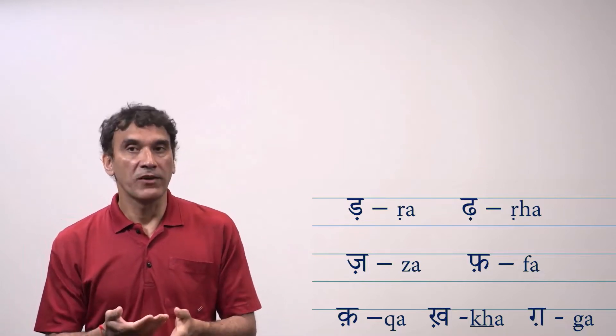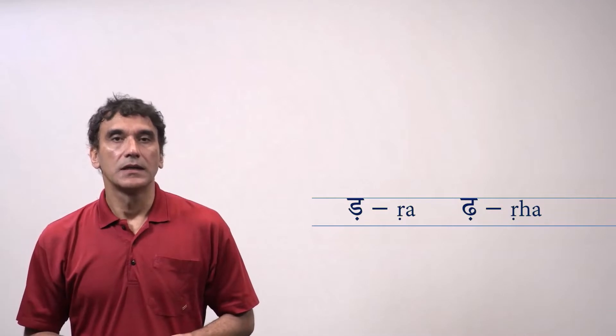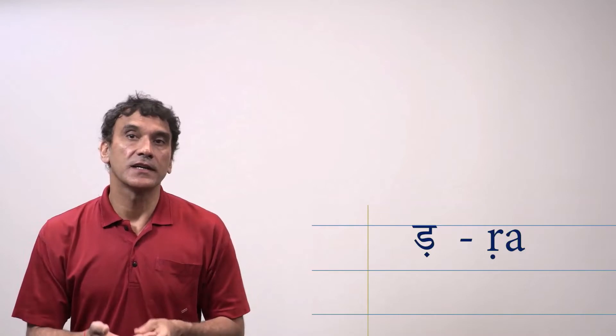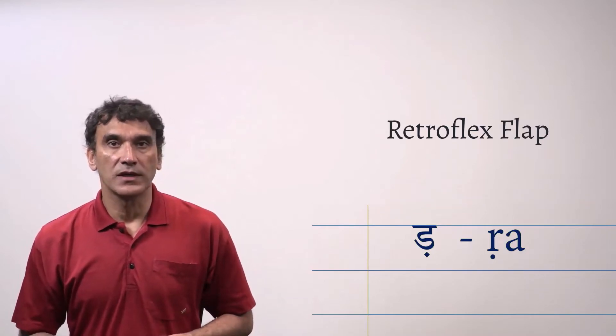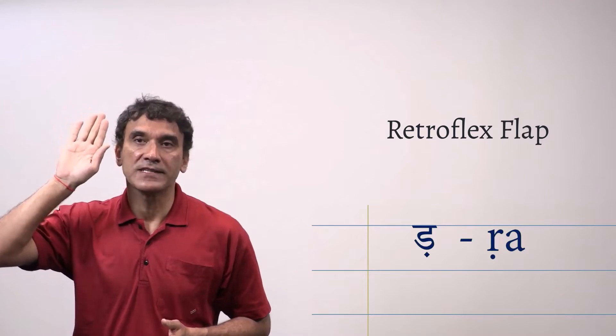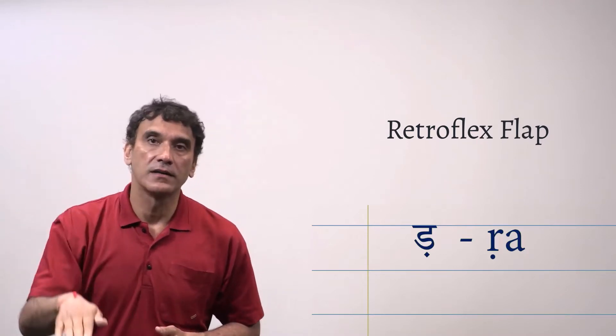Let's take them one by one. The most common ones are R and Rha. The first one is R, a retroflex flap sound. The tongue curls back and touches the hard palate and with the sound it falls. R, R.